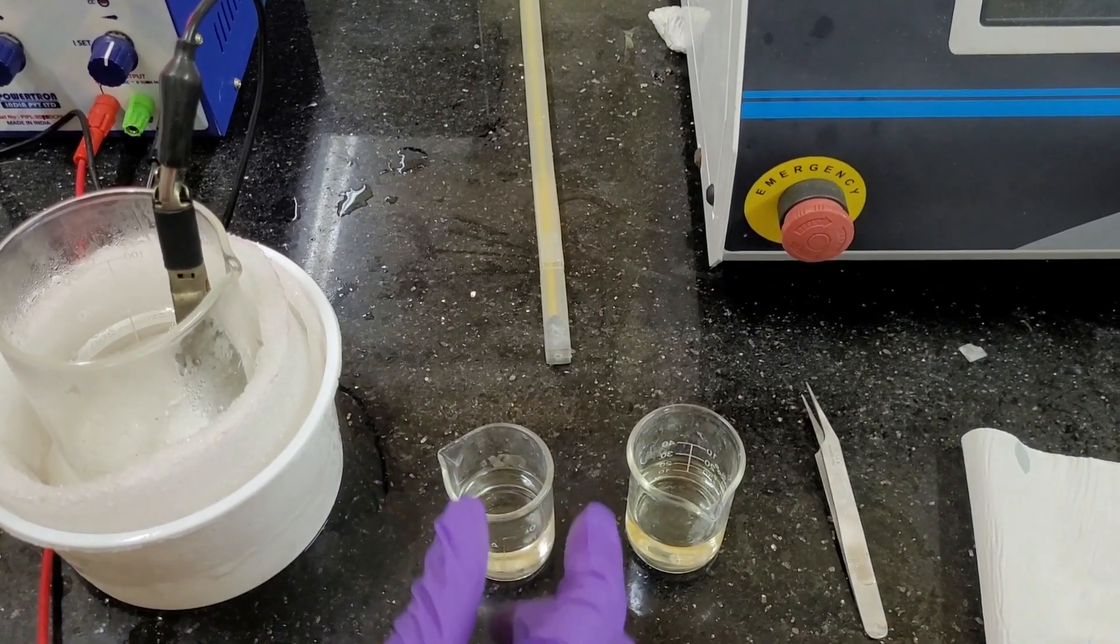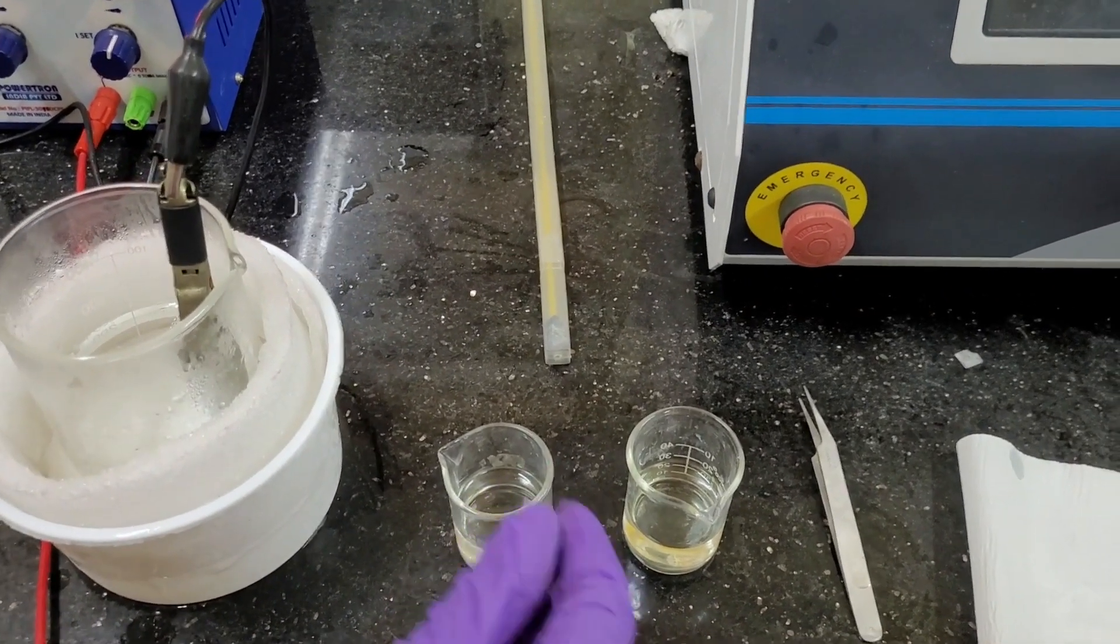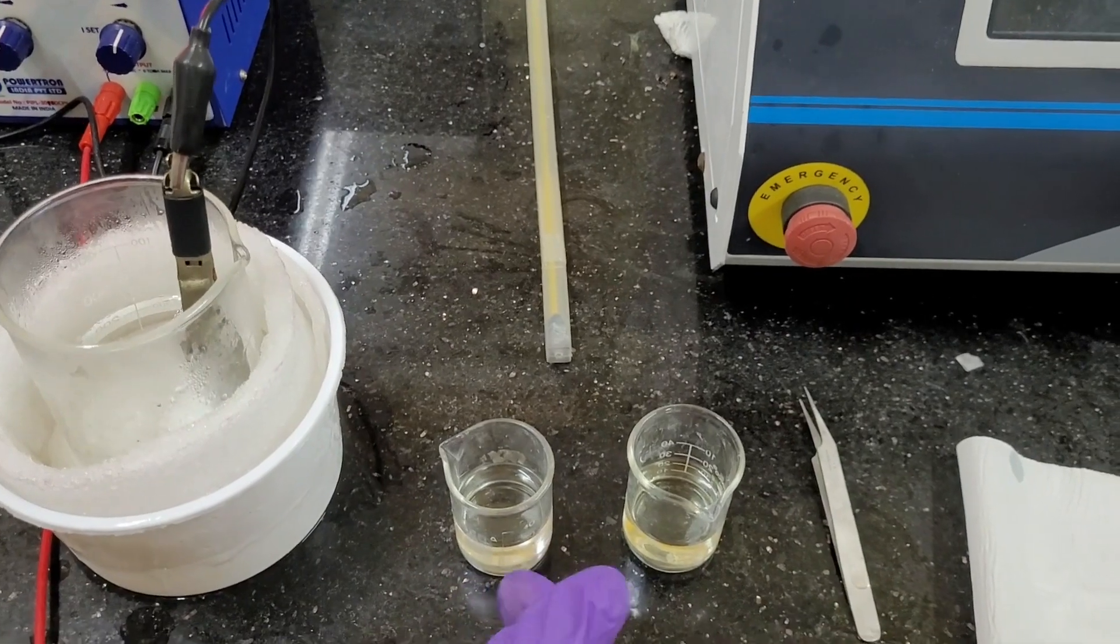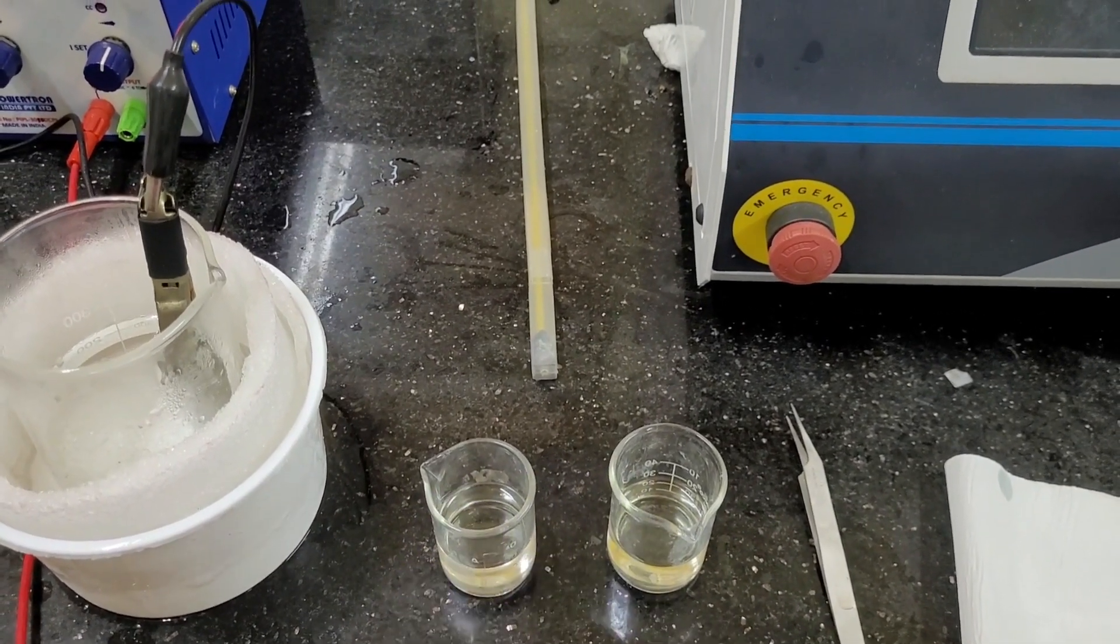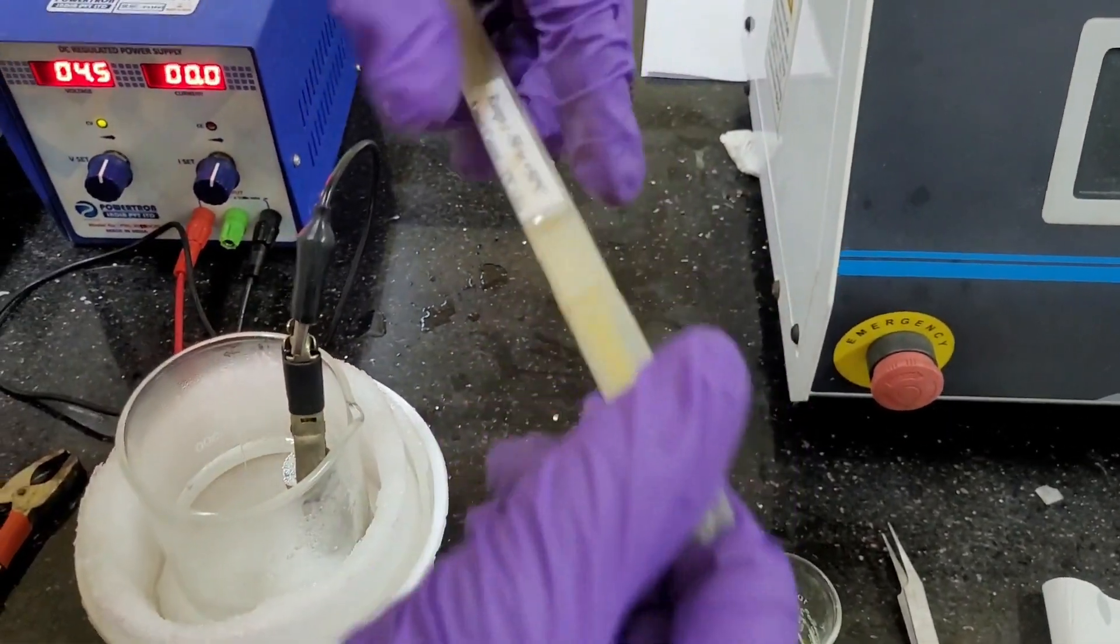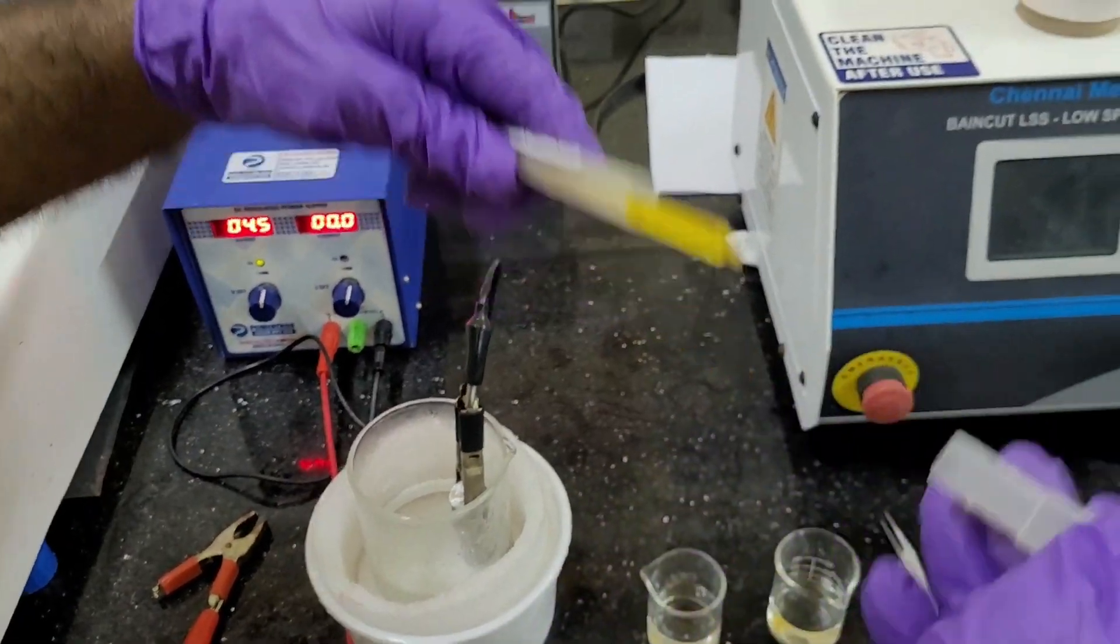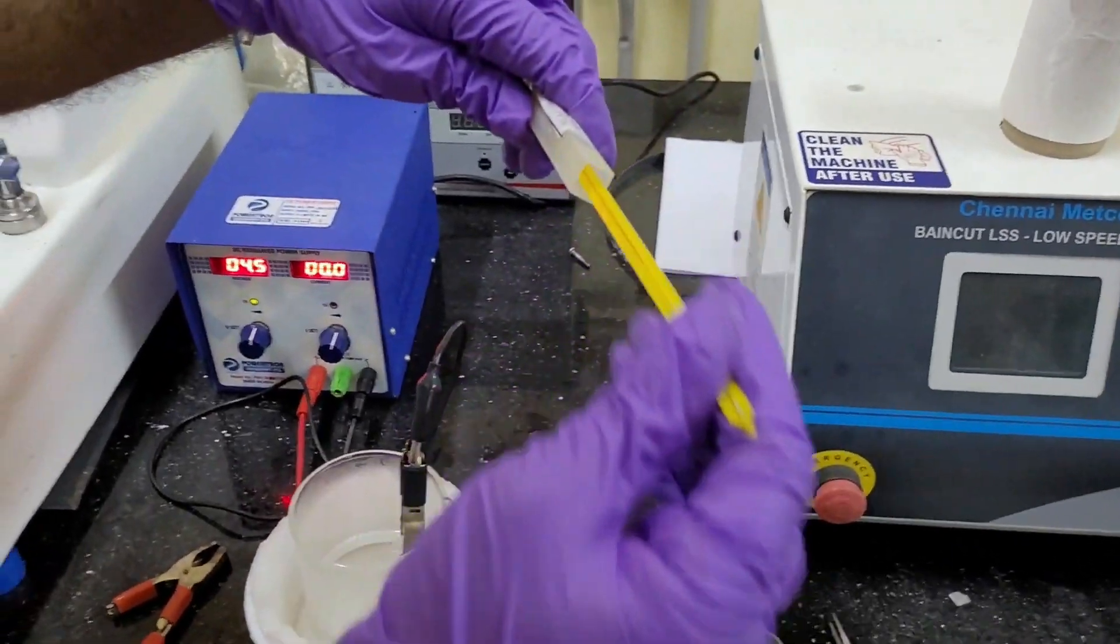This is the two beakers in which we have put any kind of cleaning solution. For example, we have taken the ethanol in these two different small beakers. And apart from all these, we also have a specific temperature measurement instrument.